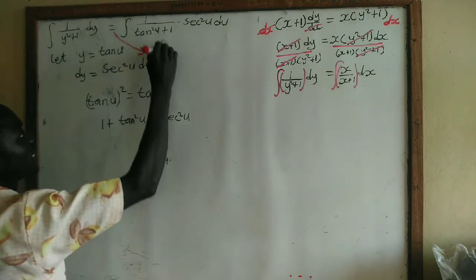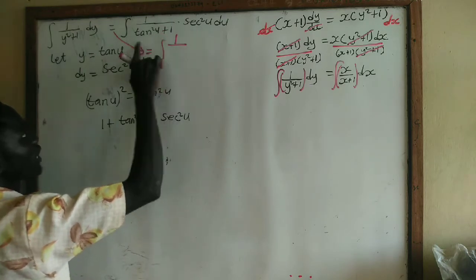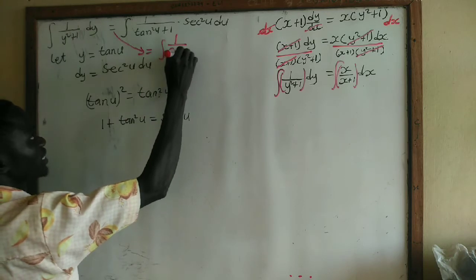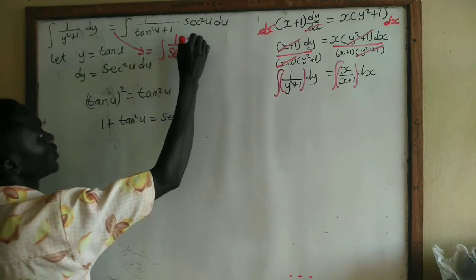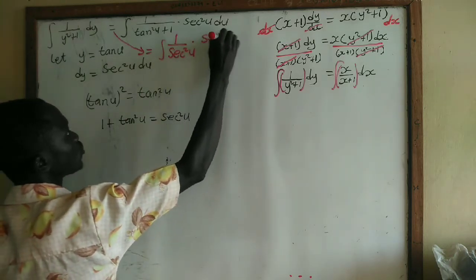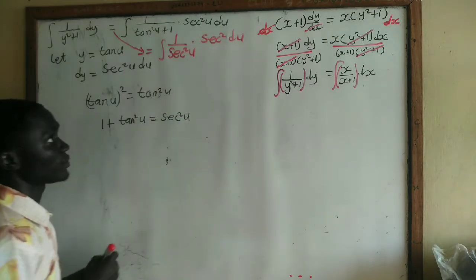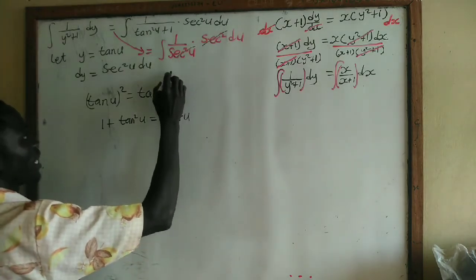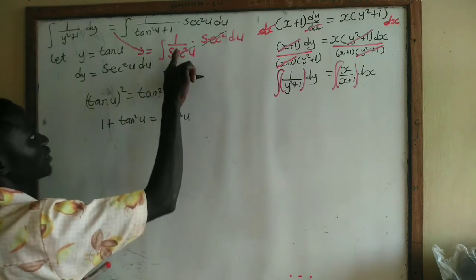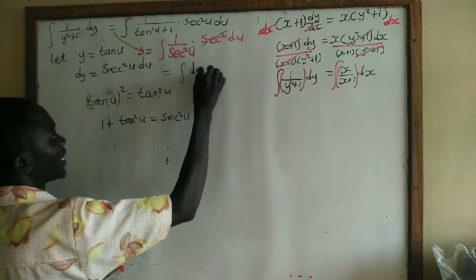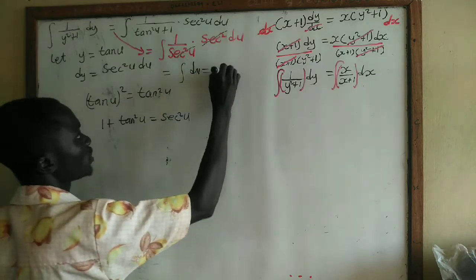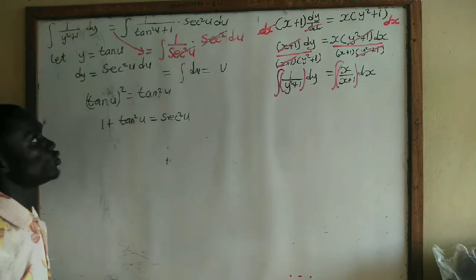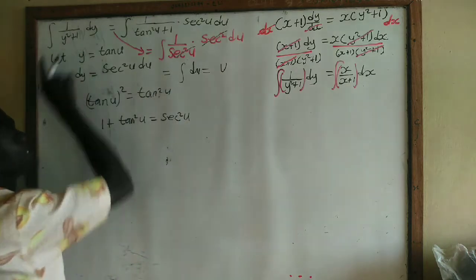So the integral becomes 1/(sec²(u)) times sec²(u) du. The sec²(u) cancels with sec²(u) and we are left with the integral of 1 du, which is simply du. Integrating du gives us u.